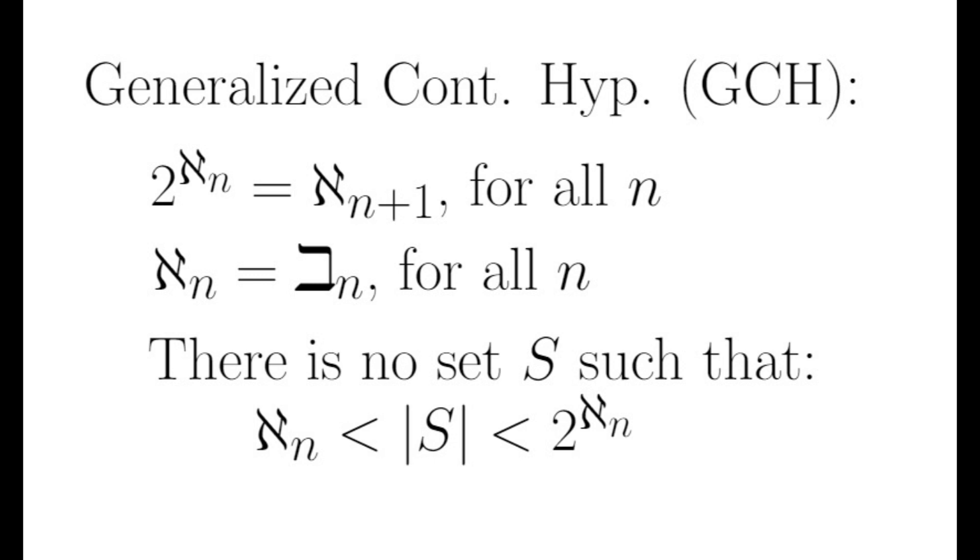In other words, there are no cardinal numbers in between the Beth numbers. This is called the Generalized Continuum Hypothesis, or GCH. Like the Continuum Hypothesis, GCH is one of the greatest open questions in mathematics.